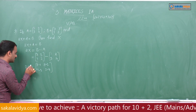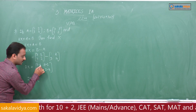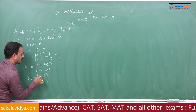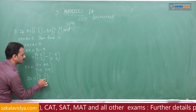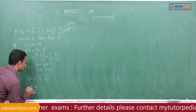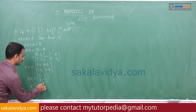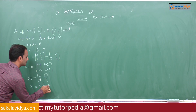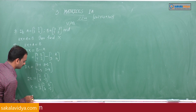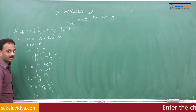So 2X equals the matrix [3-1, 8-2; 7-3, 2-4], which gives [2, 6; 4, -2]. Therefore X equals 1/2 into [2, 6; 4, -2], where 1/2 is a scalar.